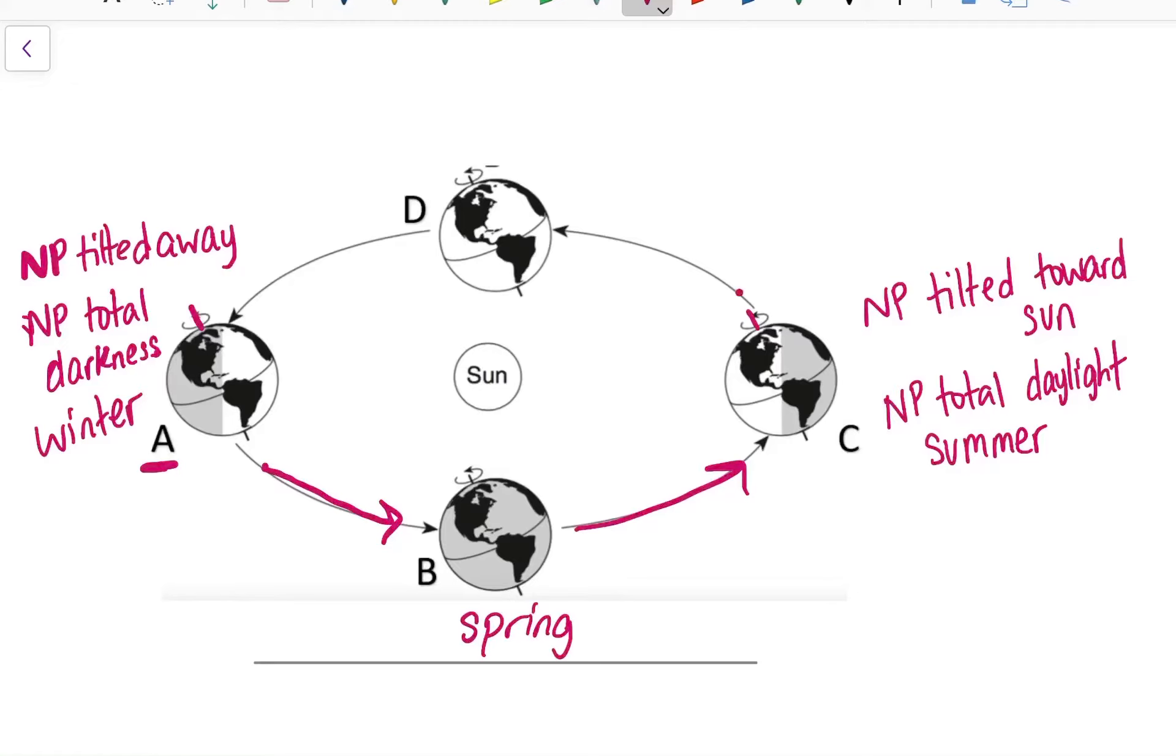I keep moving around my diagram. Moving from C to D, then position D must be fall.